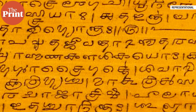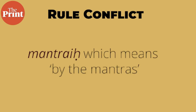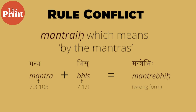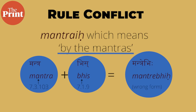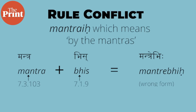Let's understand this with an example. Let's take the word that means 'from the mantras' or 'by the mantras.' We are looking at a word formed by combining the root 'mantra' and the word for 'from' or 'by.' Mantras here is plural — mantra means roughly a slogan — and the affix 'bhis,' meaning 'from something in plural,' is added to the root word 'mantra' to obtain the form meaning 'from the mantras.'